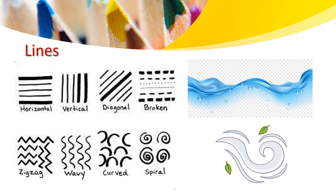Such as straight line, broken line, zigzag, wavy, curve, and spiral. These are all types of lines. But where can we find them around us?